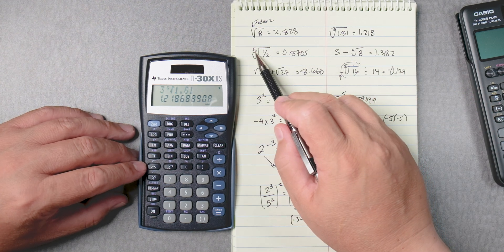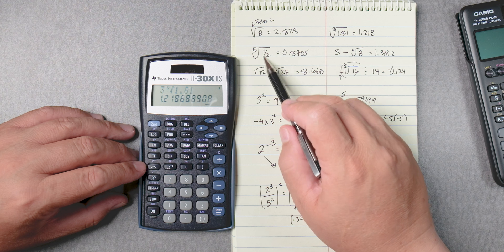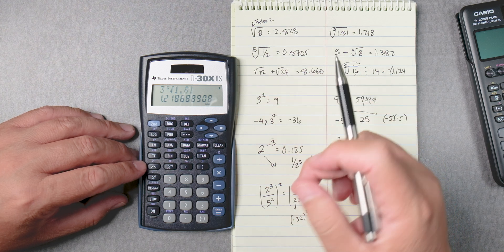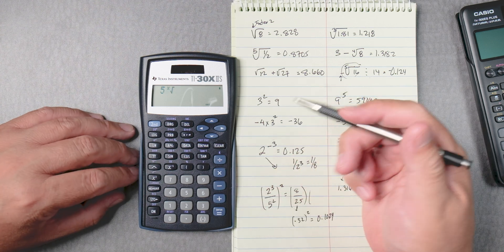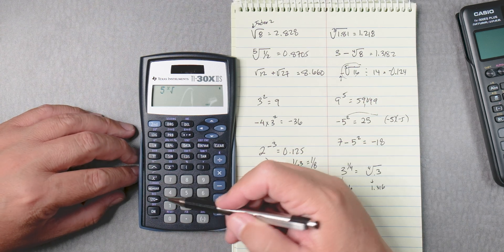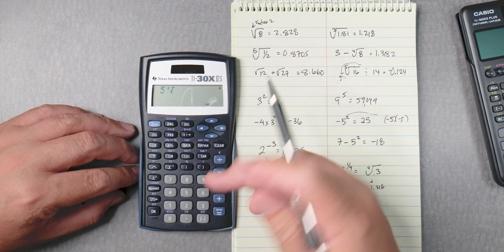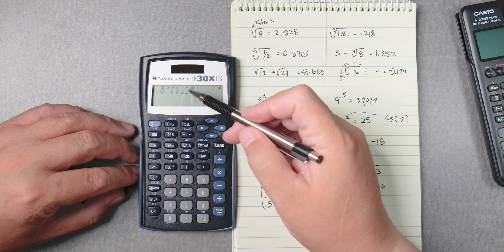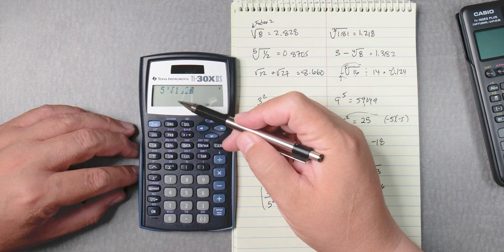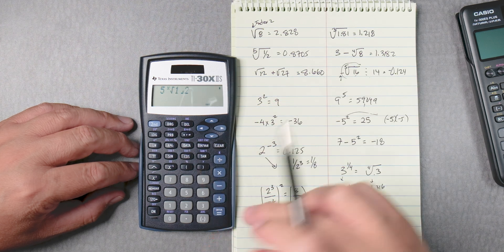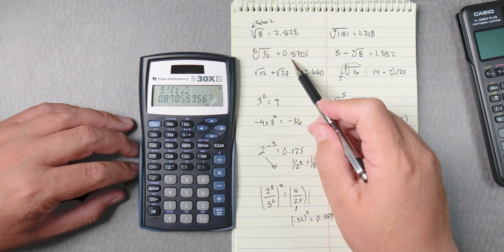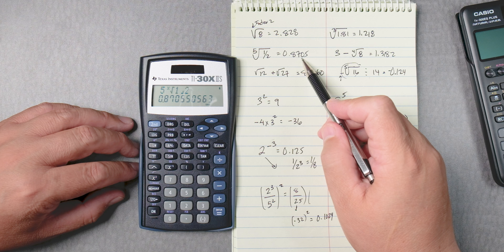So here, we got the fifth root of half. So what you can do is 5, second, caret. You can use the ABC button, right? 1, ABC, 2. You don't need to close it because there's no parenthesis, right? Over here. And you just enter and get 0.8705.